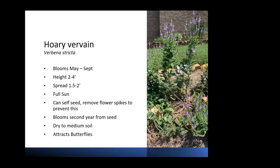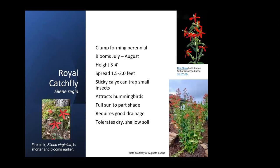Royal catchfly is another beautiful flower. It grows fairly tall, up to three to four feet, and it's stunning in the garden — great in the back of a border. The photo on the left is fire pink, from Land Between the Lakes, so it does grow naturally in our area. That's a slightly smaller plant that blooms a little bit earlier, and it's another in that family that you could plant — it's a native.